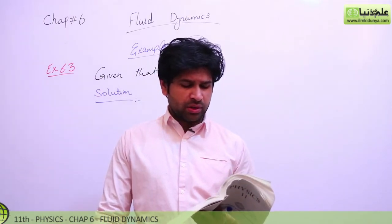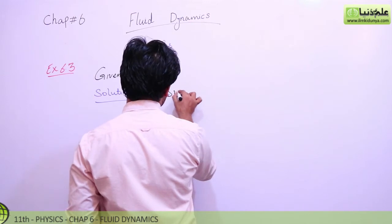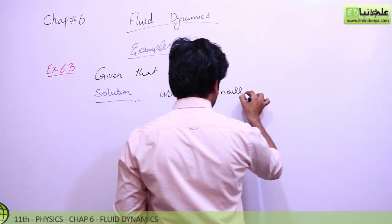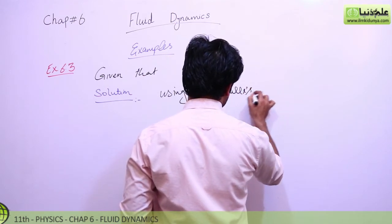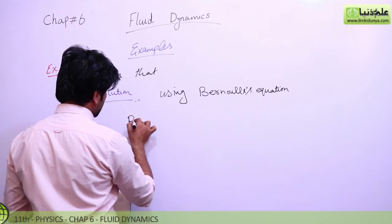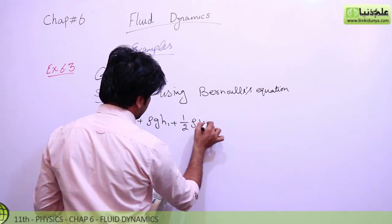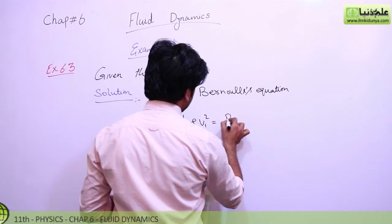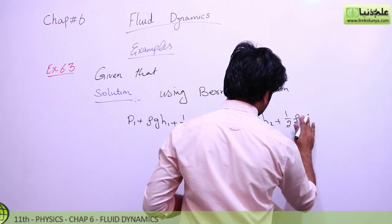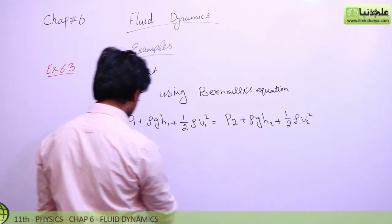Using Bernoulli's equation: p1 + ρgh1 + ½ρv1² = p2 + ρgh2 + ½ρv2². We need to find p2, so we will rearrange this equation.